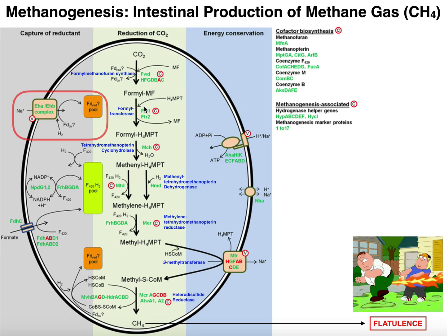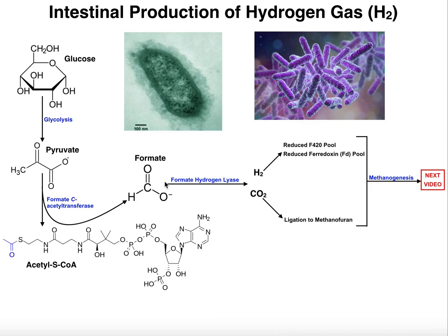Methanofuran is involved in the first step of methanogenesis, which we'll cover in the next video. The other product of formate hydrogen liase is hydrogen gas, H2. Hydrogen gas will also be used in methanogenesis because it's consumed by two types of enzymes. One type generates F420 in the reduced state. F420 is a coenzyme very similar to heme, named because it absorbs light at 420 nanometers, and it will be used to perform some reductions in methanogenesis.